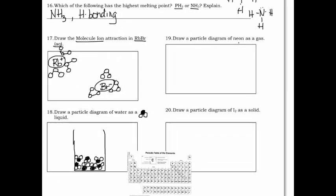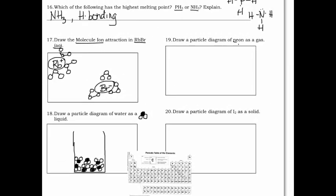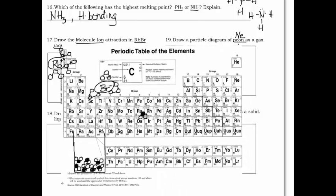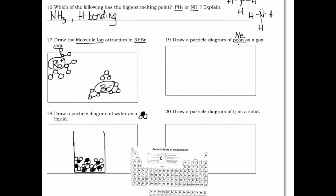Number 19: draw neon as a gas. Neon is a noble gas, so it doesn't bond to anything — draw single circles for each atom. Because it's a gas, spread them out through the space.